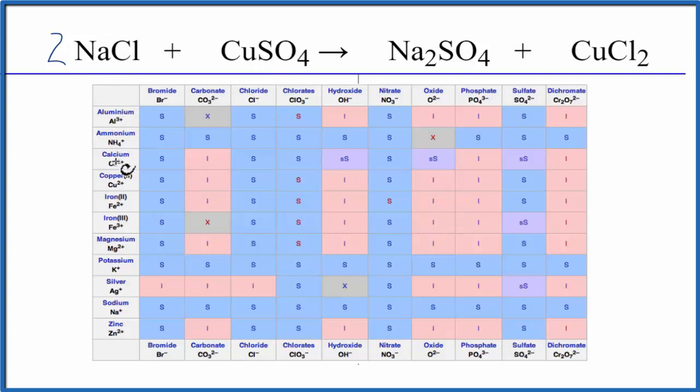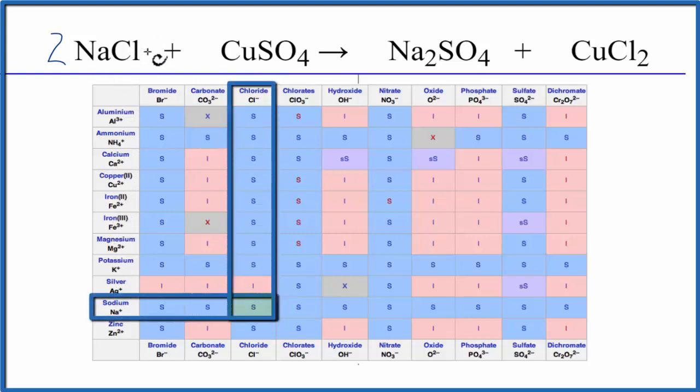So we look down, we find sodium, sodium right here, and then chloride. So since this is soluble, we write a little aqueous after it, which means soluble in water.